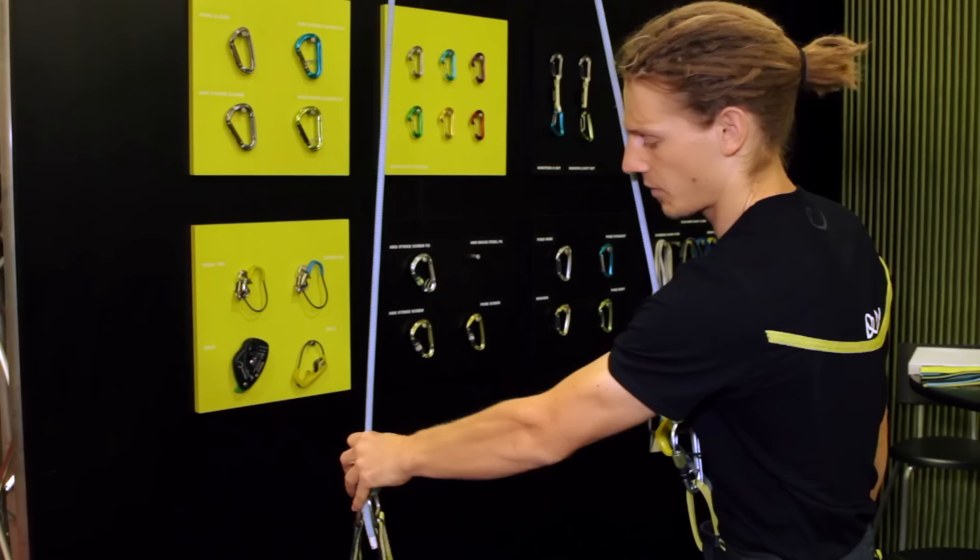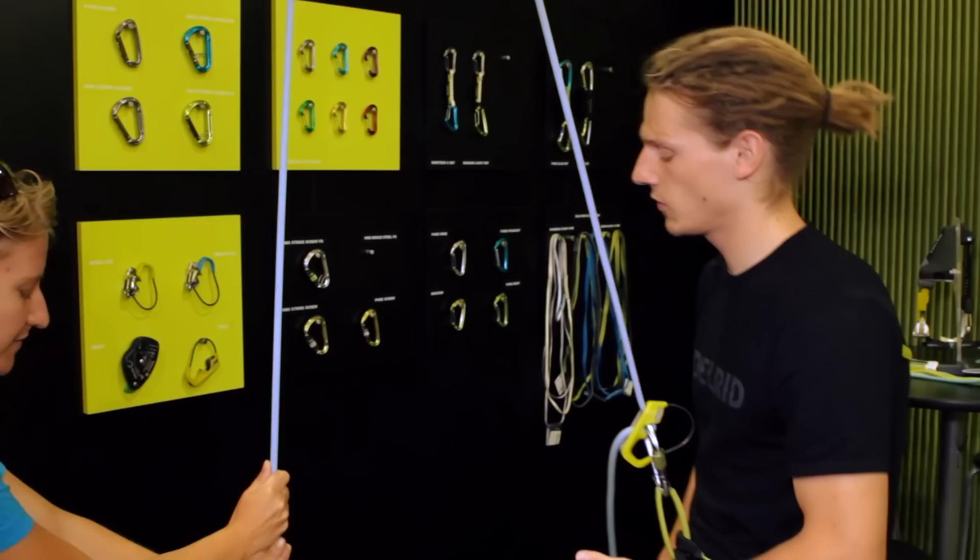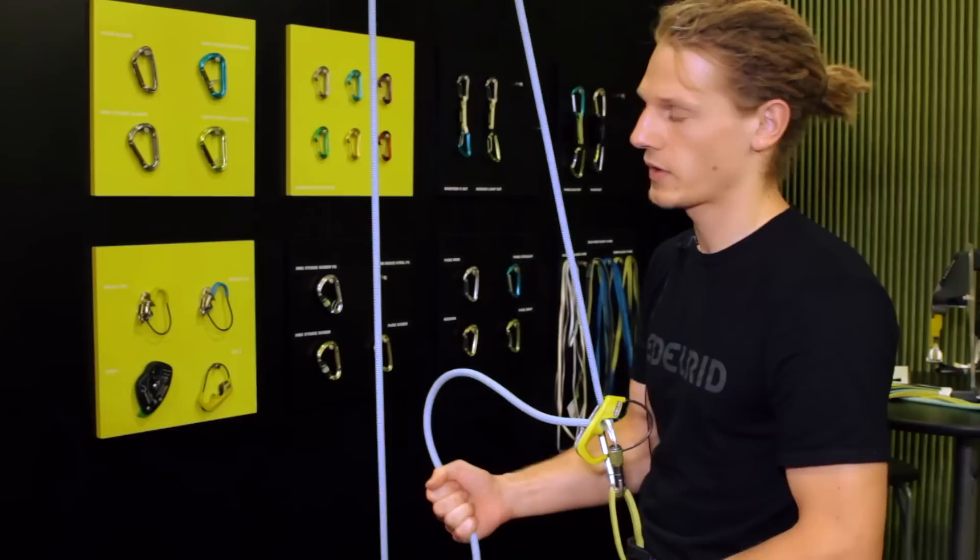As soon as there is load on the rope, it's more or less blocking, but not entirely. So you can see that here it's sliding through the device. So what we want to do with that is actually on the one side, we want to teach the user to not let go of the braking rope.